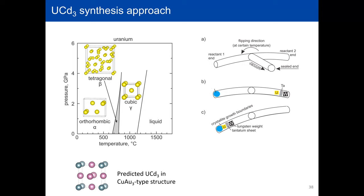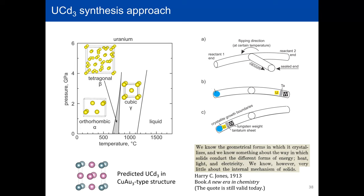With uranium, synthesis is not easy, especially with cadmium — a very volatile element that crystallizes on the colder side of the tube, making composition control very hard. Uranium also has many allotrope modifications at synthesis temperatures, reacts with silica tubes, and has many issues to keep in mind. My approach was to separate the reaction tube into a precursor reactant and uranium, heated separately to a specific temperature — for example, to get cubic gamma uranium, which has a similar structure to the target structure. When we reach that allotrope modification, we flip the tube and allow gamma uranium to react with the other precursor, growing the structure.